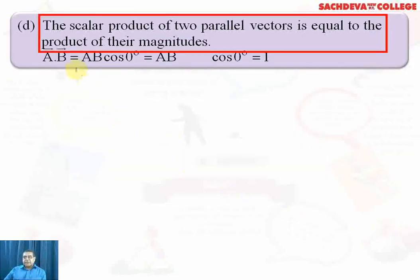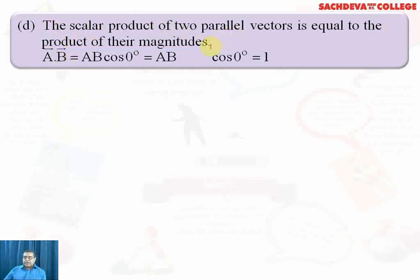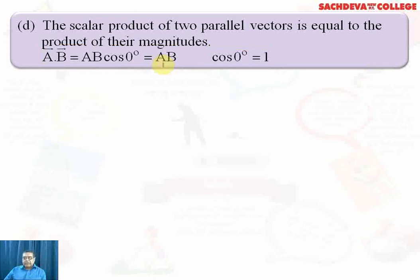Another property is that the scalar product of two parallel vectors is equal to the product of their magnitudes. When we use the term parallel vectors, the angle between the two parallel vectors will be 0. So the dot product of A and B will equal AB cos 0. Since cos 0 is 1 trigonometrically, AB is multiplied by 1 and the result is AB. Therefore, the dot product of A and B will equal the magnitude of A into B.